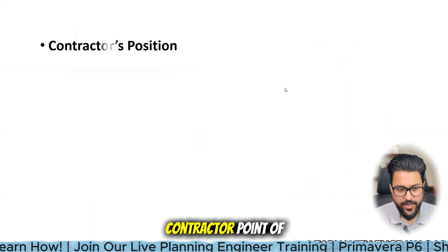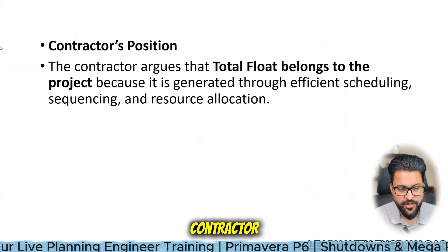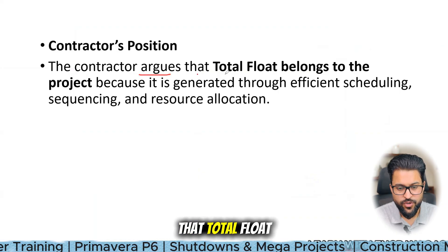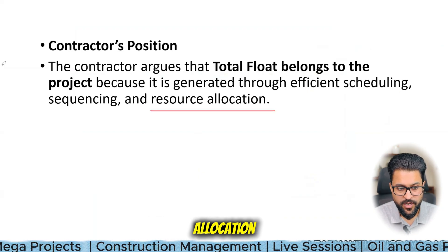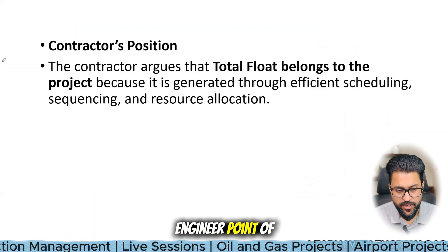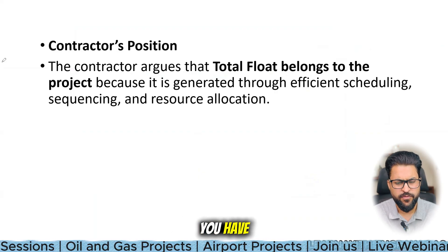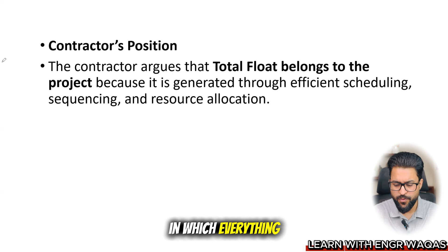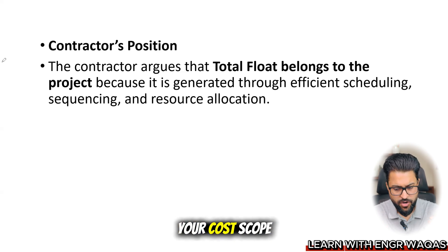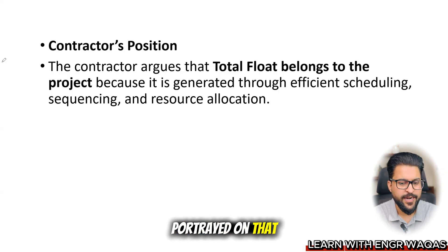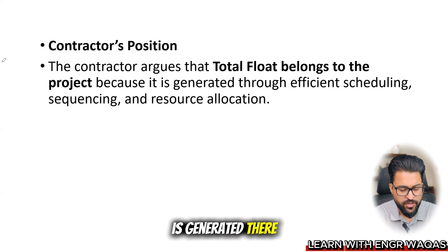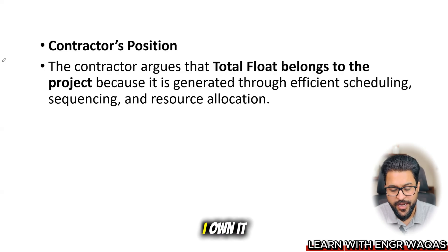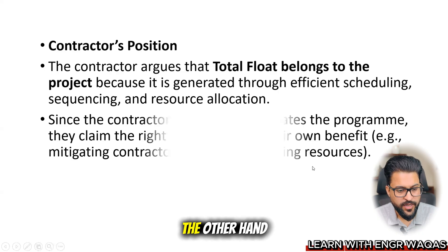From the contractor's point of view, the contractor argues that total float belongs to the project because it is generated through efficient scheduling, sequencing, and resource allocation. As a planning engineer, you struggle a lot in Primavera P6 preparing a model where time, cost, scope, and resources are all integrated. The contractor's argument is: this is my work, my strategy, my resource deployment — so this total float was generated by my strategy, and I own it.